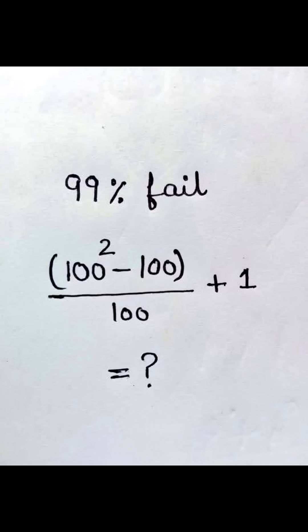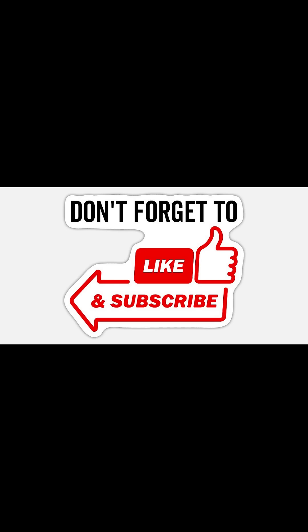it down. 100 squared is 10,000, right? Subtract 100, that's 9,900. Now divided by 100, so you get 99. And add 1, and the final answer is 99 plus 1, which is 100. So did you get